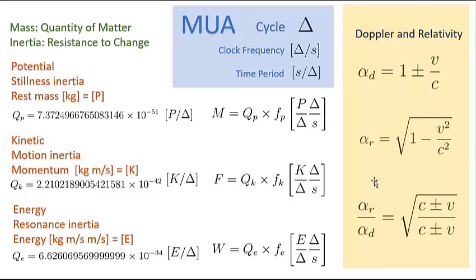When you're doing both Doppler and relativity — for an object moving away from you or towards you — you can use C plus V over C minus V, or C minus V over C plus V, under a square root to get the relativistic Doppler shift. So this would be alpha relativity divided by alpha Doppler. This is a neat and tidy way of doing this, and that is why I'm writing it like this in my specification.